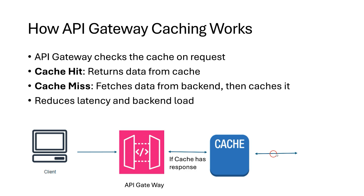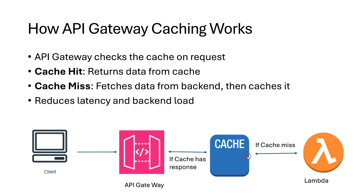If the cache is missed, the request is forwarded to the backend. The backend processes and sends the response back to the cache, where it is stored before being sent through API Gateway to the client. The next time the client makes the same request, it won't be a cache miss — the cached response will be sent back directly. This reduces latency and backend load.